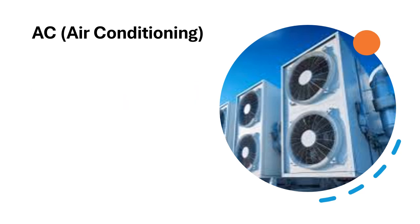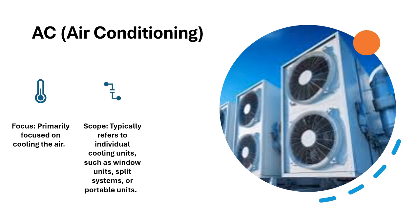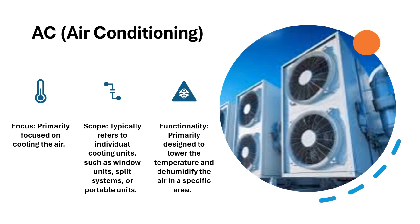AC — Air Conditioning. Focus: Primarily focused on cooling the air. Scope: Typically refers to individual cooling units, such as window units, split systems, or portable units. Functionality: Primarily designed to lower the temperature and dehumidify the air in a specific area.